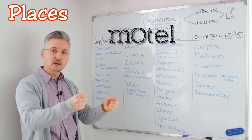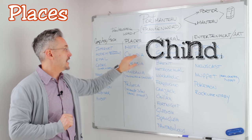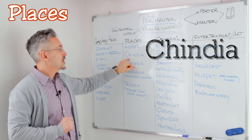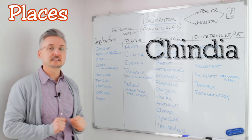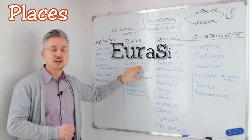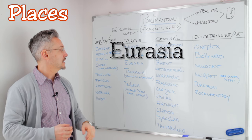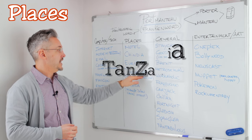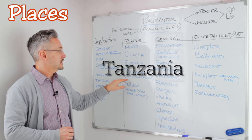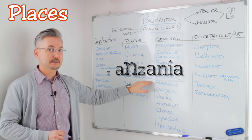So with your car — motor and hotel. Chindia: China and India. Eurasia: Europe and Asia. Tanzania: Tanganyika and Zanzibar.